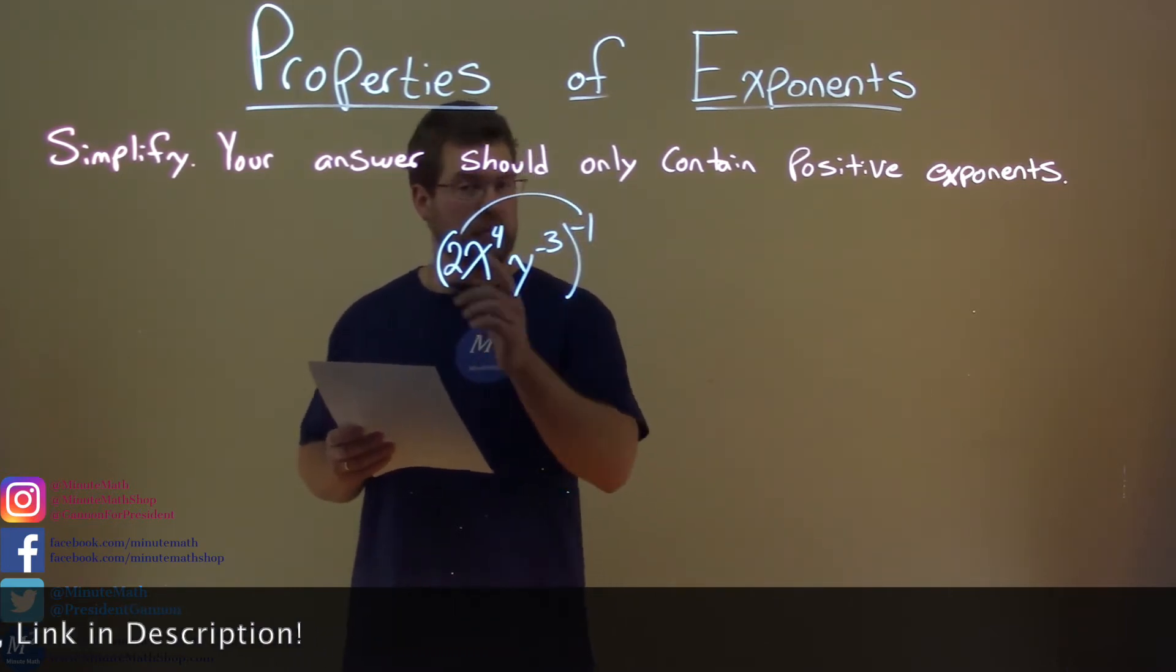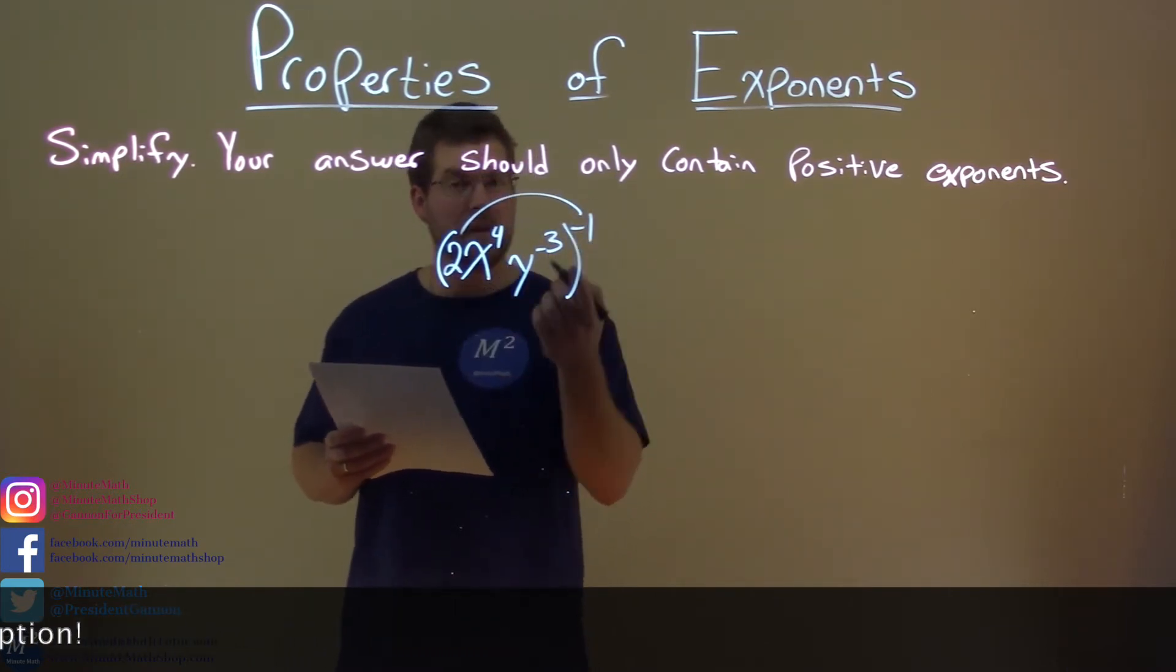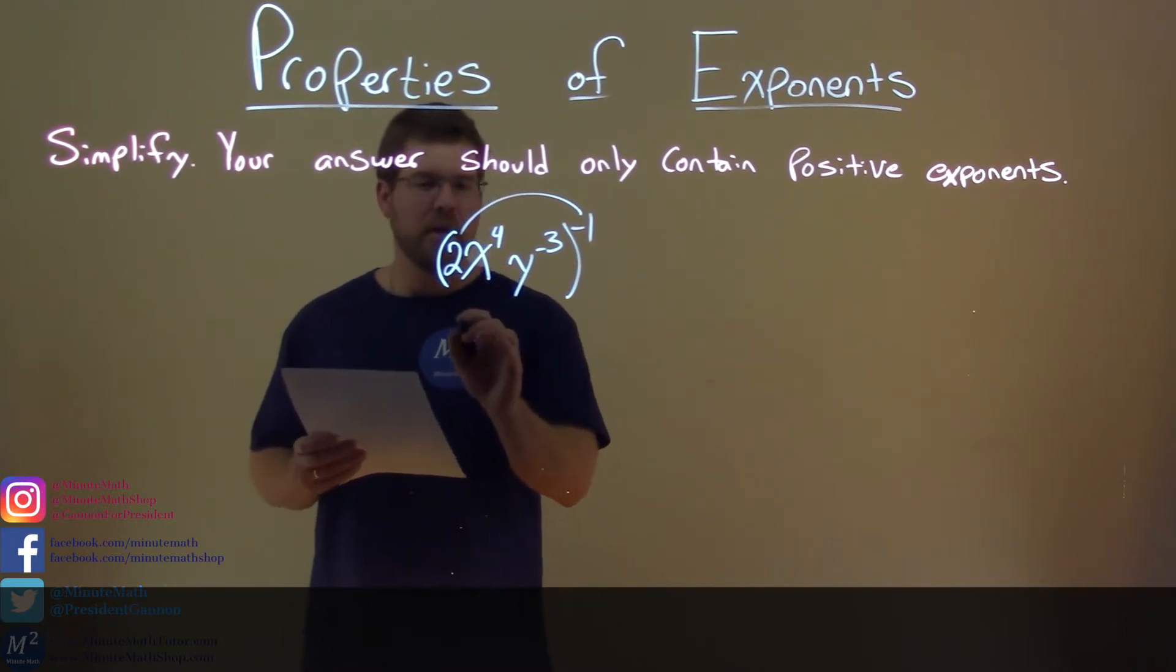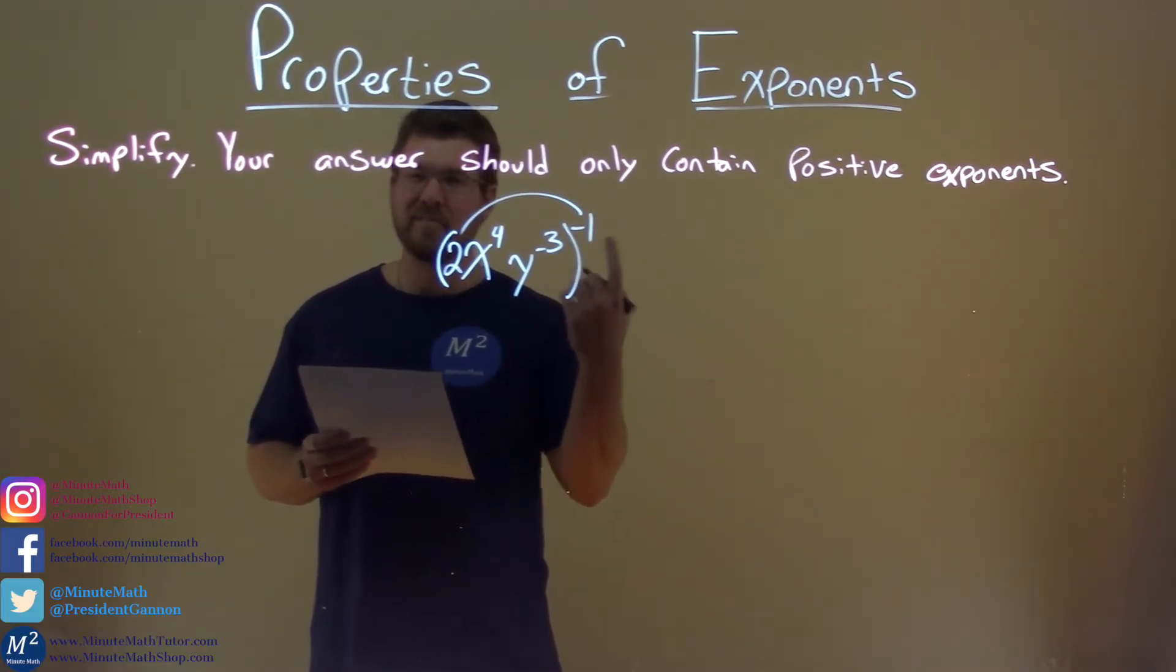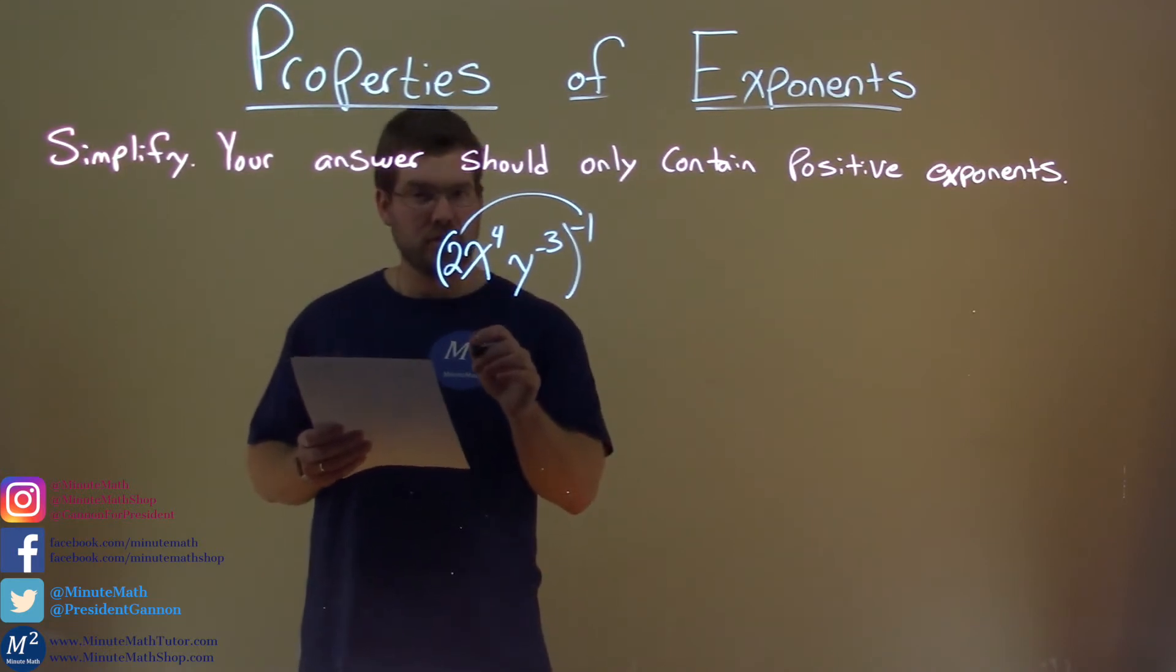Negative 1 power to the 2 up here is 2 to the negative 1 power, which we know to be 1 over 2.